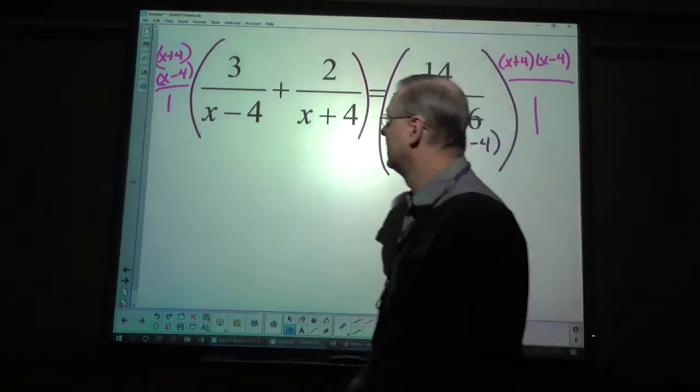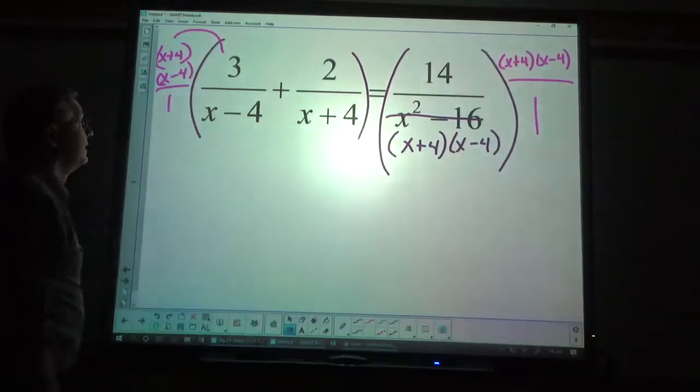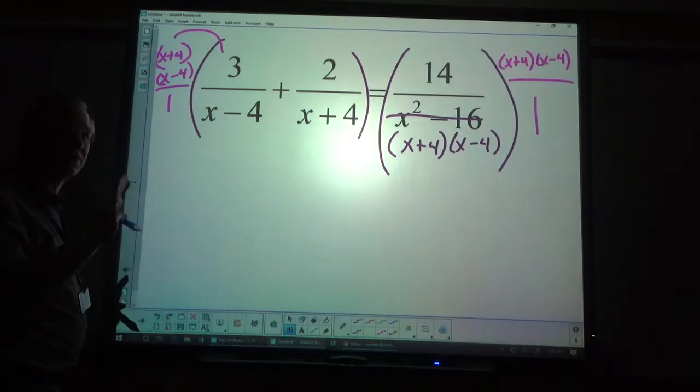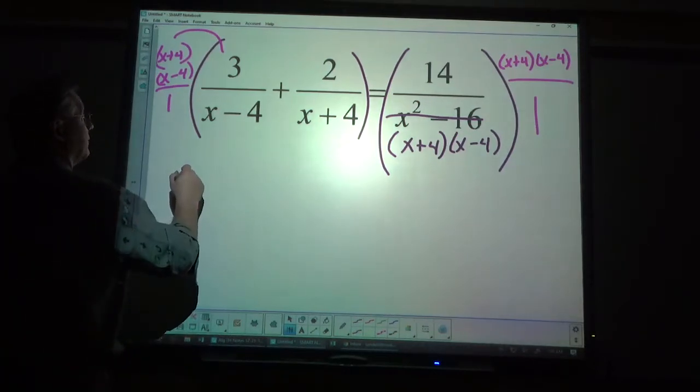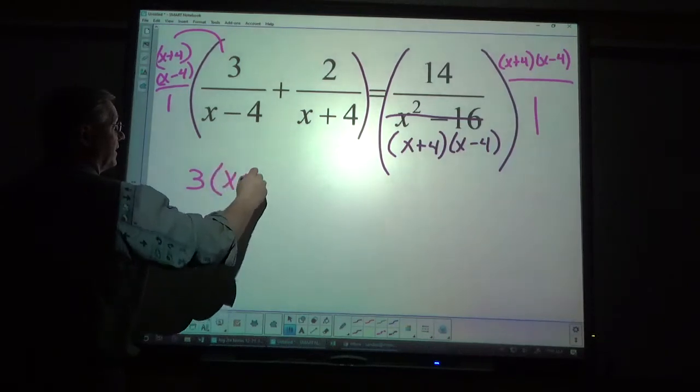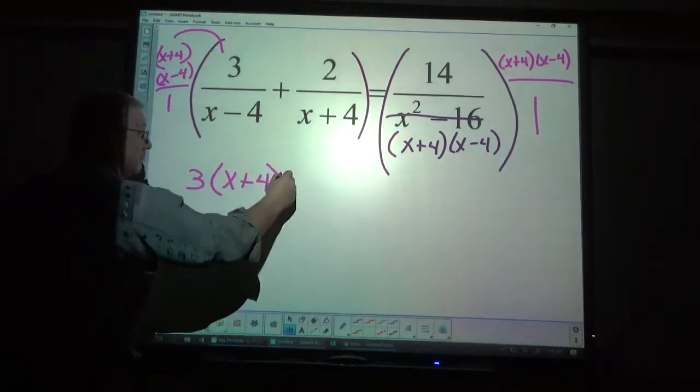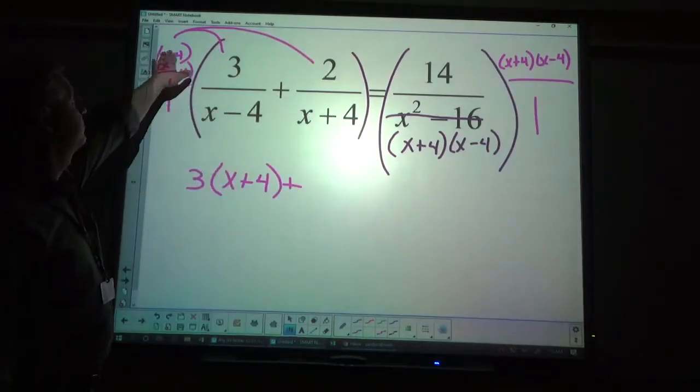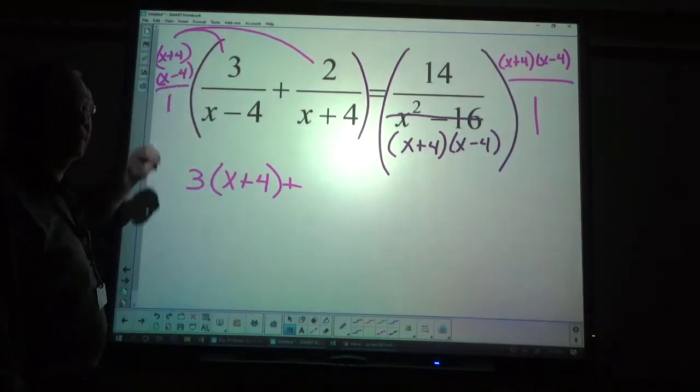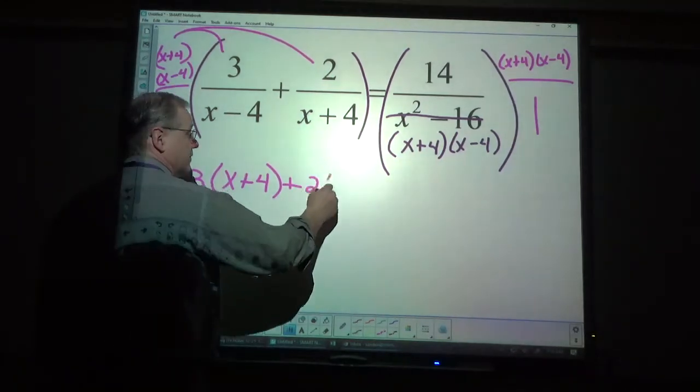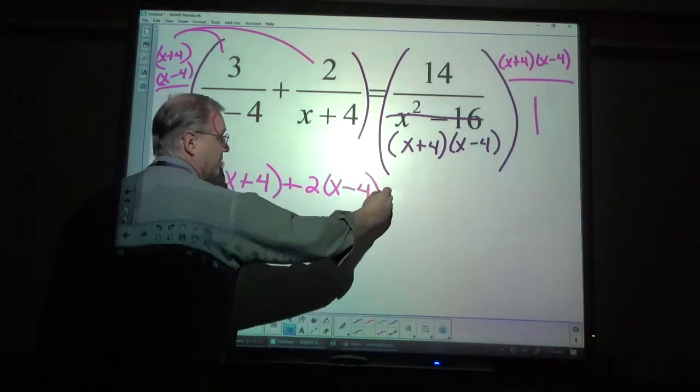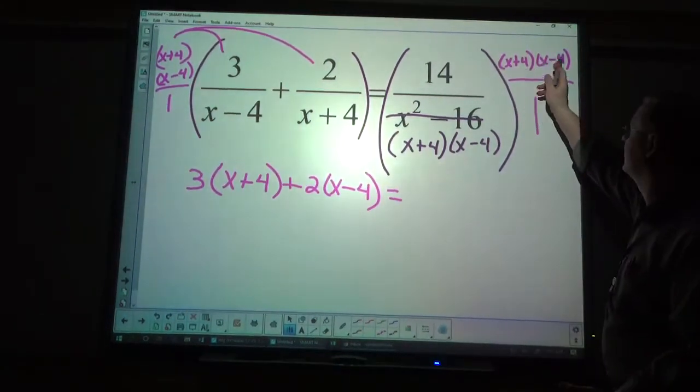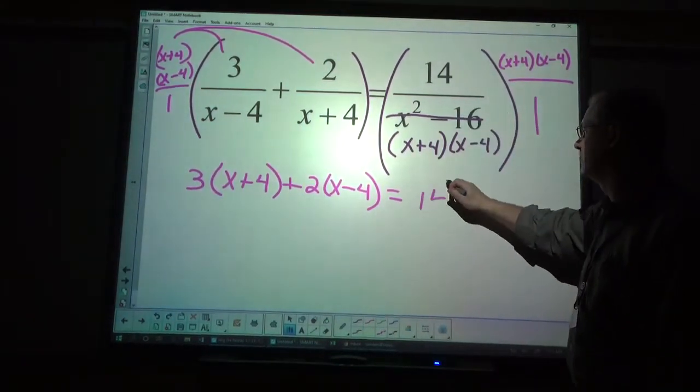When I work on this side, the x minus 4 is cancelled out. I'm going to just write this out. I'll multiply after. So, what I'm left with is a 3 times x plus 4. When I distribute here, the x plus 4 is cancelled. And, I have a 2 and an x minus 4. And, on this side, both the x plus 4 and the x minus 4 cancel out. So, I'm left with 14.